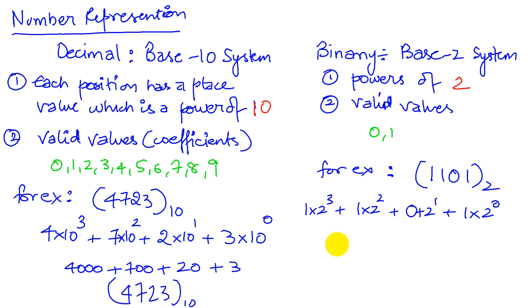So I add them up. I get an 8 plus a 4 plus 0 times 2 to the 1, that's 0, plus 1, which is 13 in base-10. Now that we understand how a base-2 system works and how a base-10 system works, we can actually generalize this to any base.